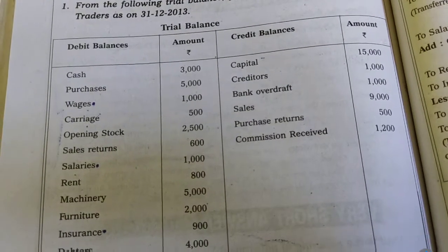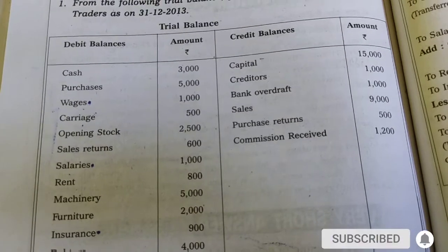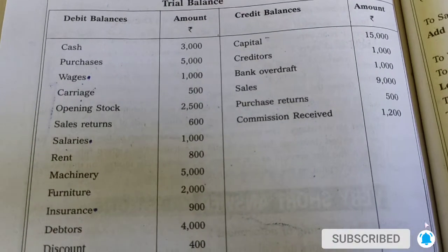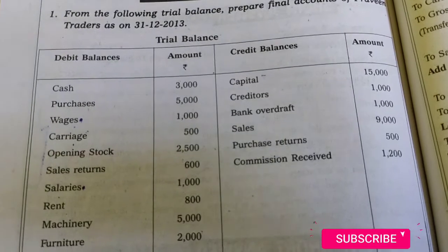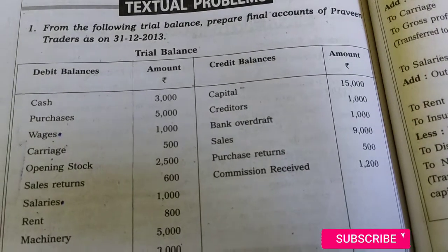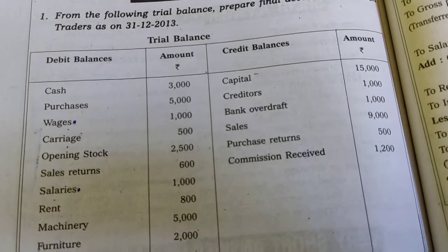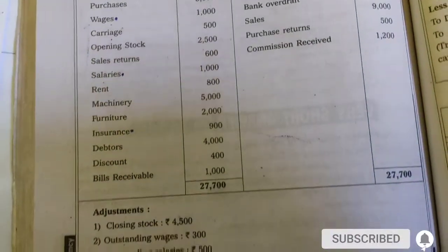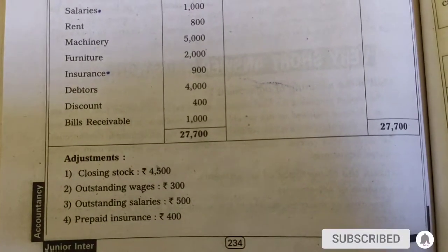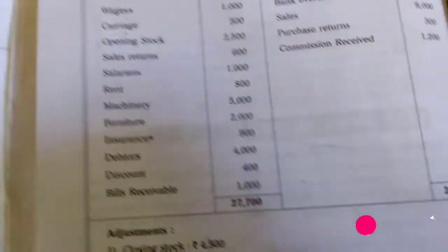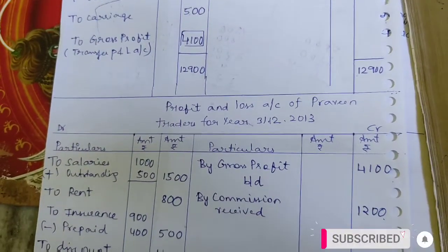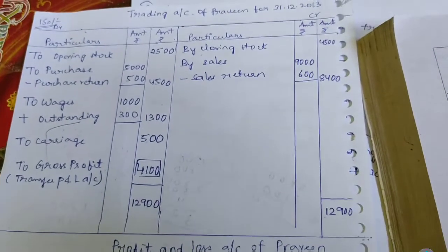I have already done many videos on accounts, including the entire Inter First Year accounts syllabus. That playlist link is in the description — do check it out. Now we will solve a model question: Final Accounts of Praveen Trader as on 31st December 2013. A trial balance with adjustments has been given. First we prepare the trading account format, then the P&L account, then the balance sheet.